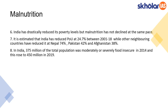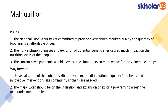As per the report, India has drastically reduced its poverty levels but malnutrition has not declined at the same pace. India reduced POU by 24.7 percentage points between 2001 and 2018, but still lags behind neighboring countries like Nepal, Pakistan, and Afghanistan. In India, 375 million people were moderately or severely food insecure in 2014, and that number has risen to 450 million in 2019. These facts can be used in your mains answer writing to substantiate your points on India's position.